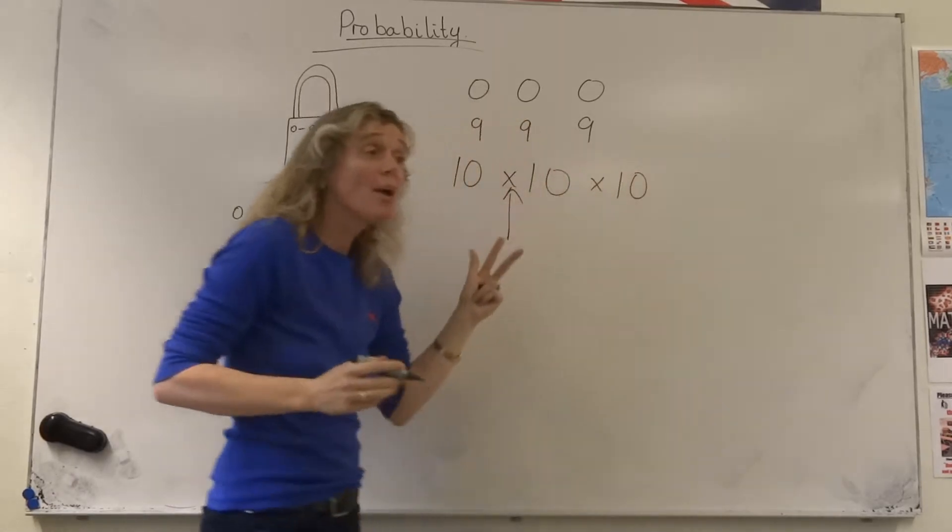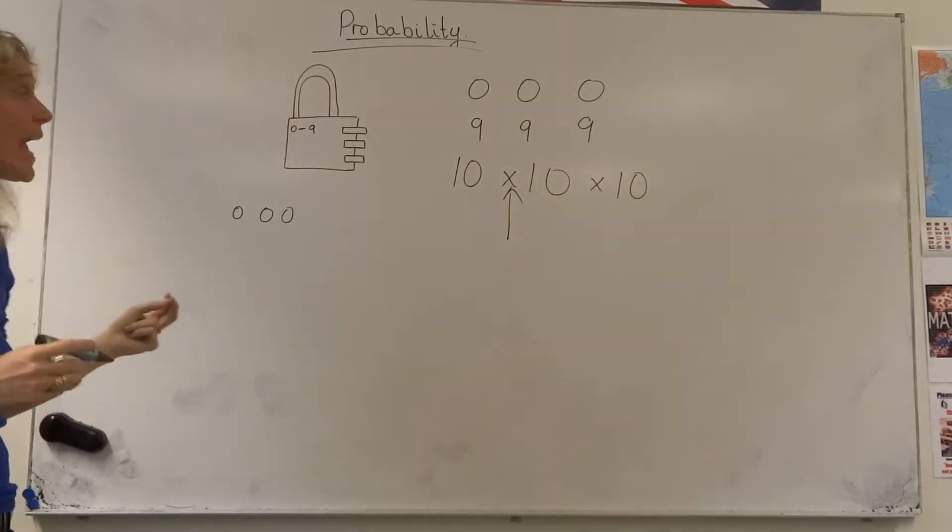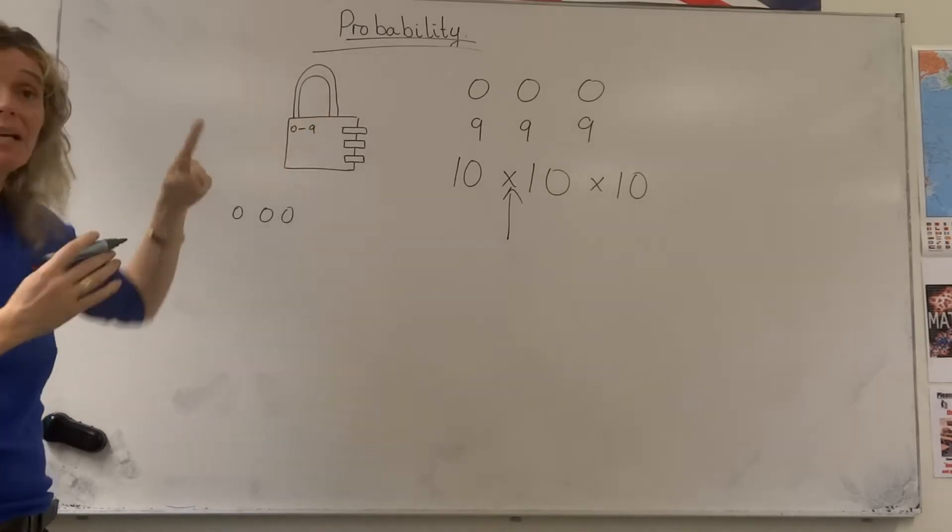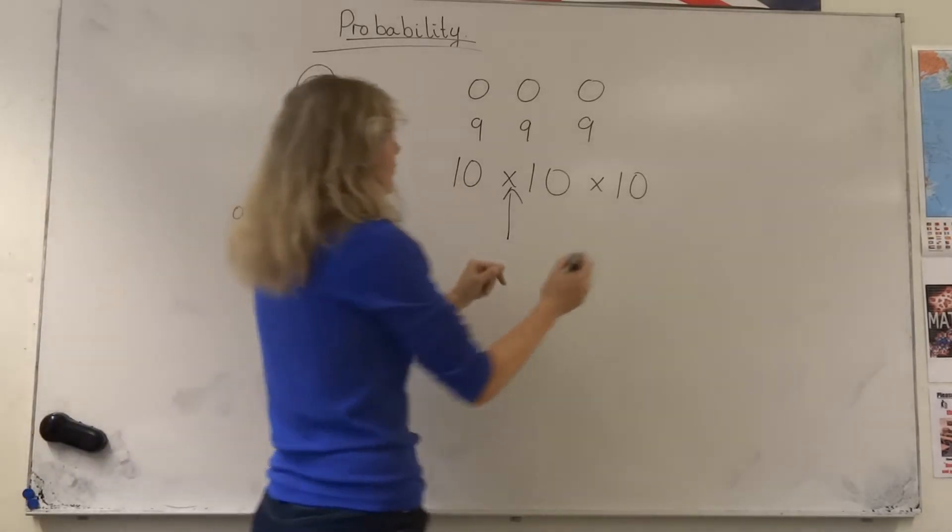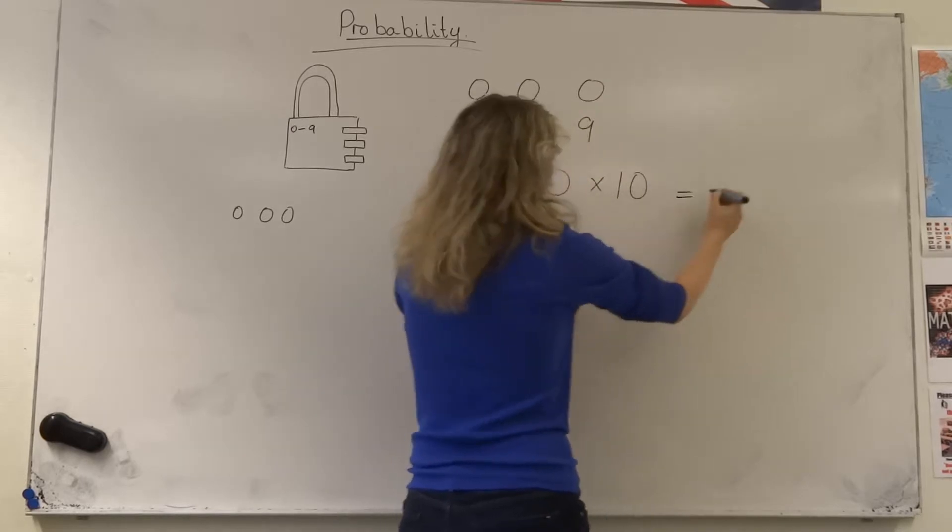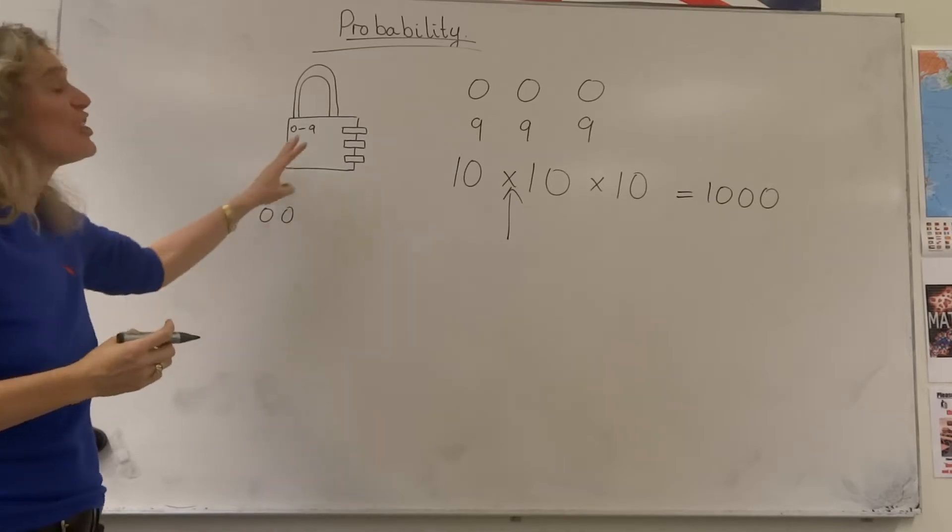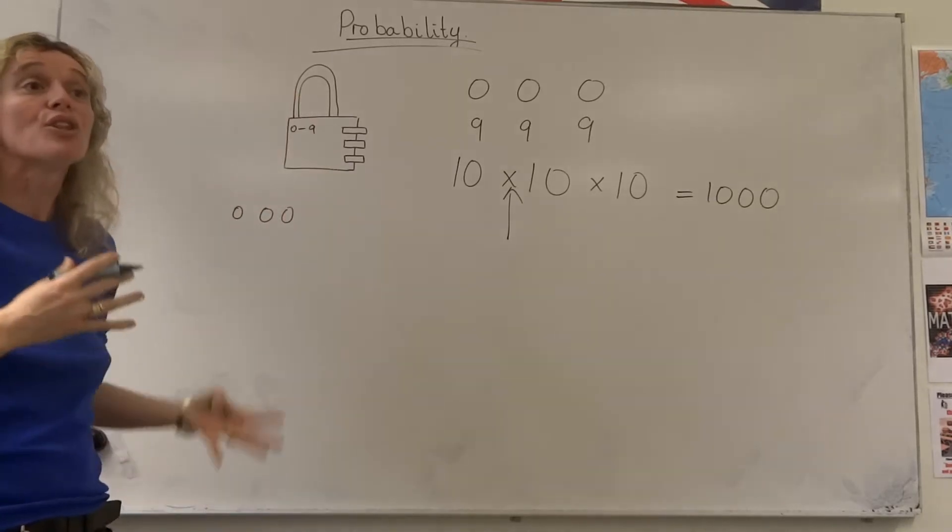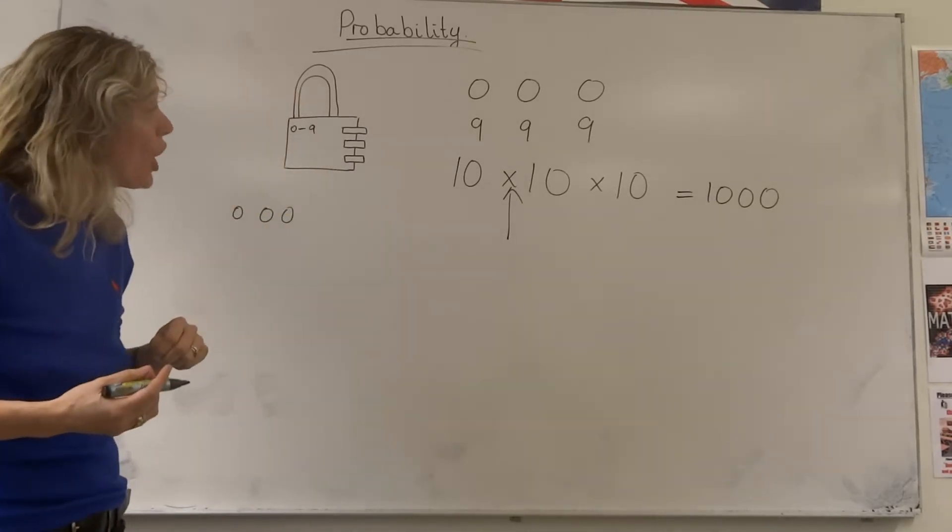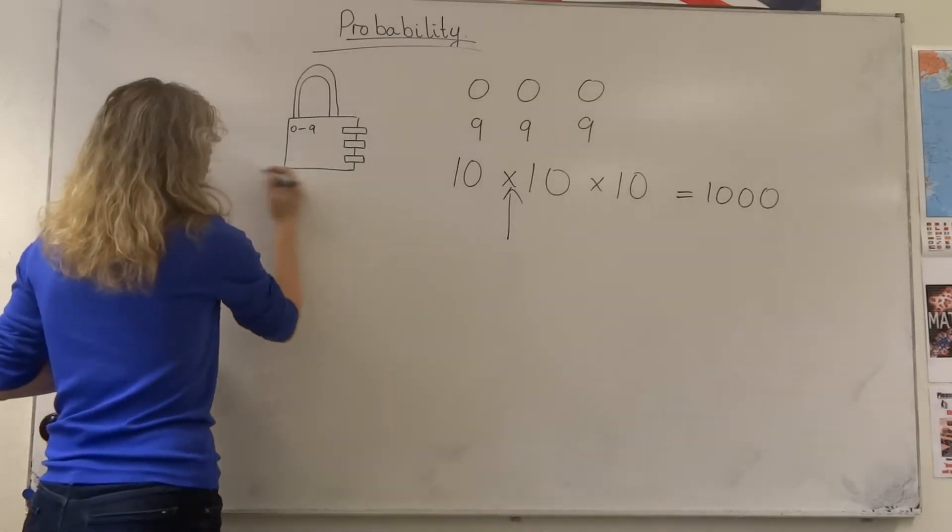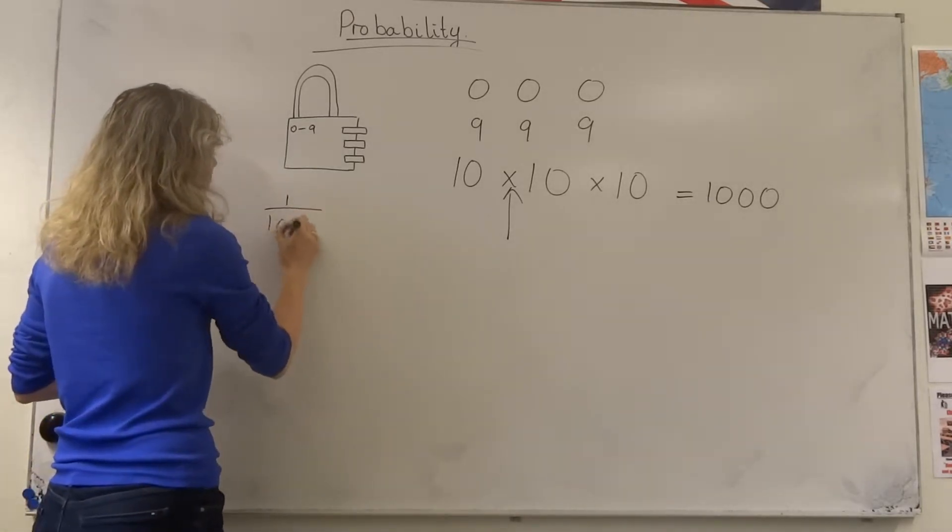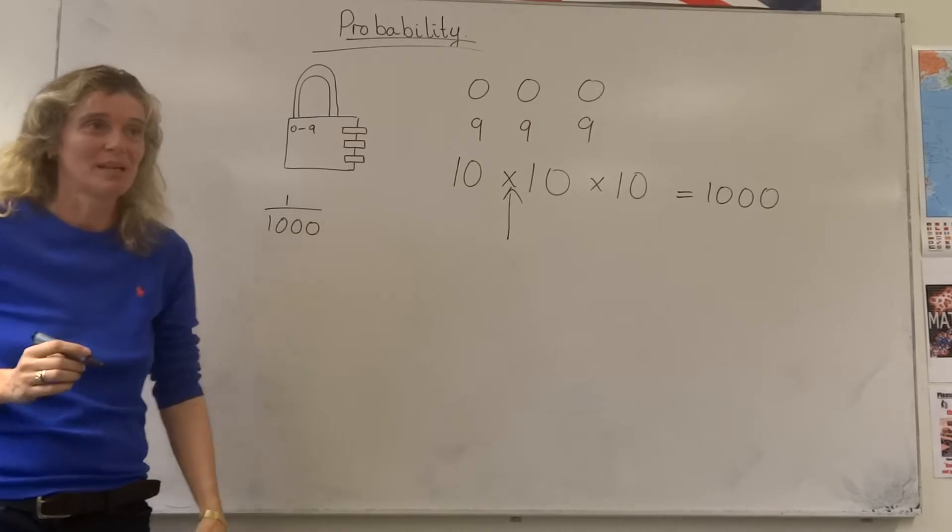So if I was allowed the same number any number of times, I would have to have, there are 1,000 different combinations for just three simple numbers. So the chance of me getting the right code first time around would be one chance out of 1,000 possibilities.